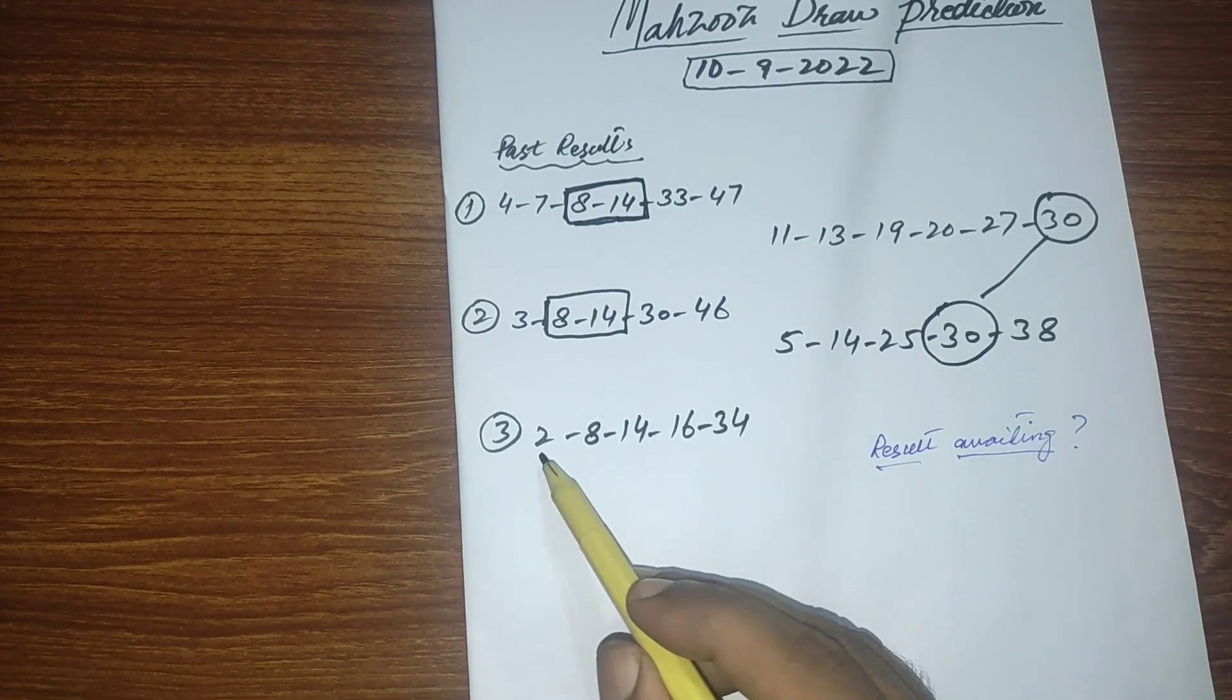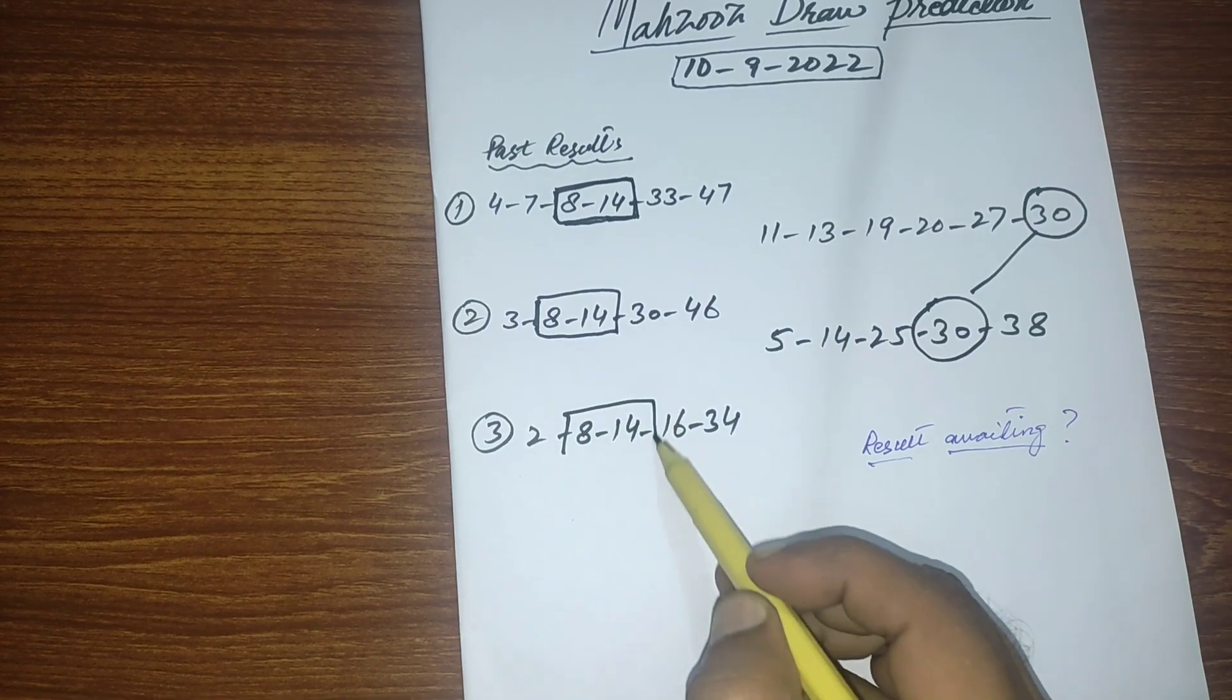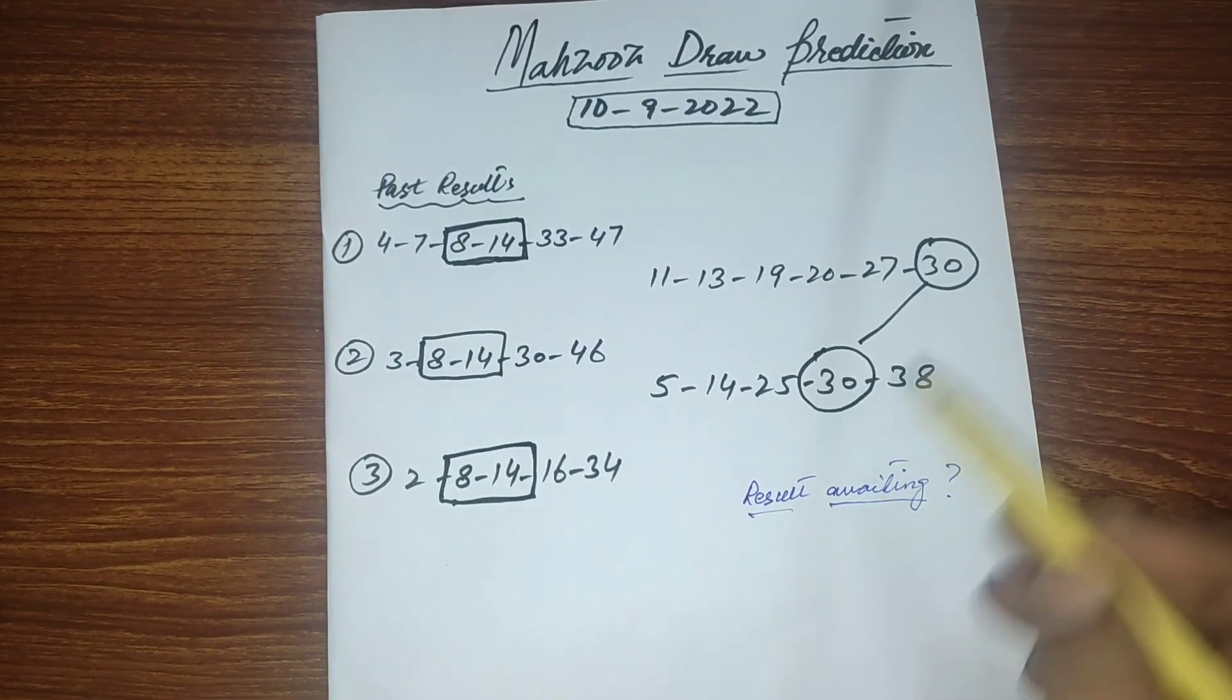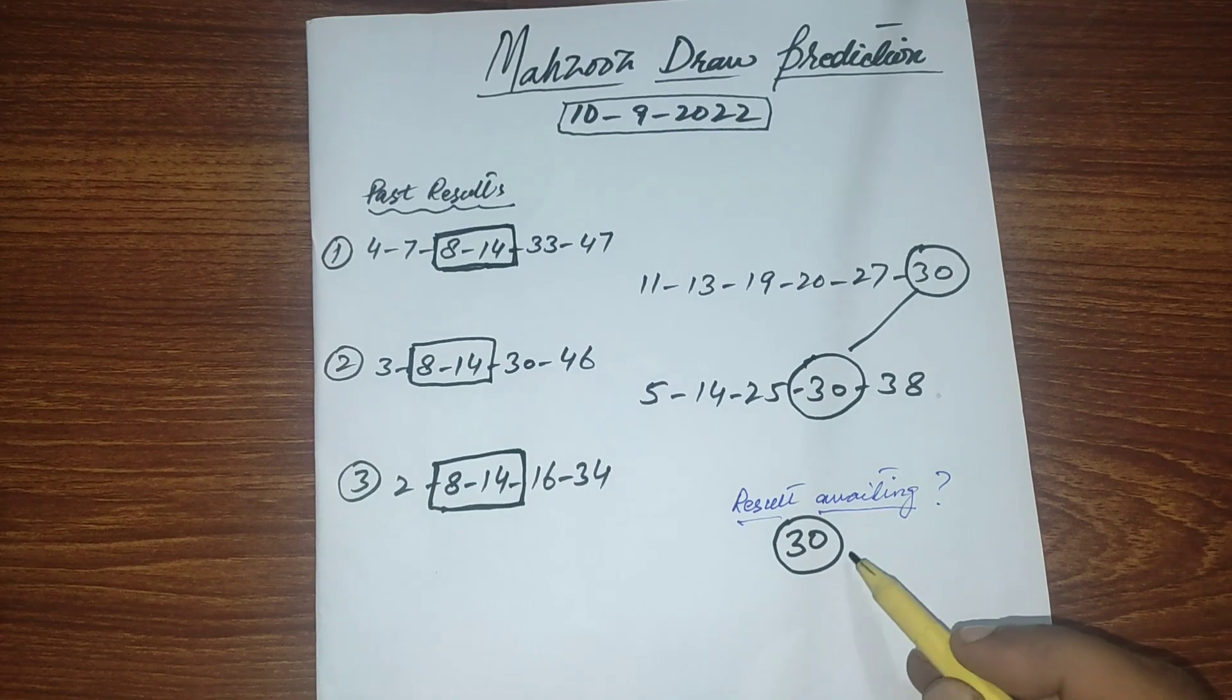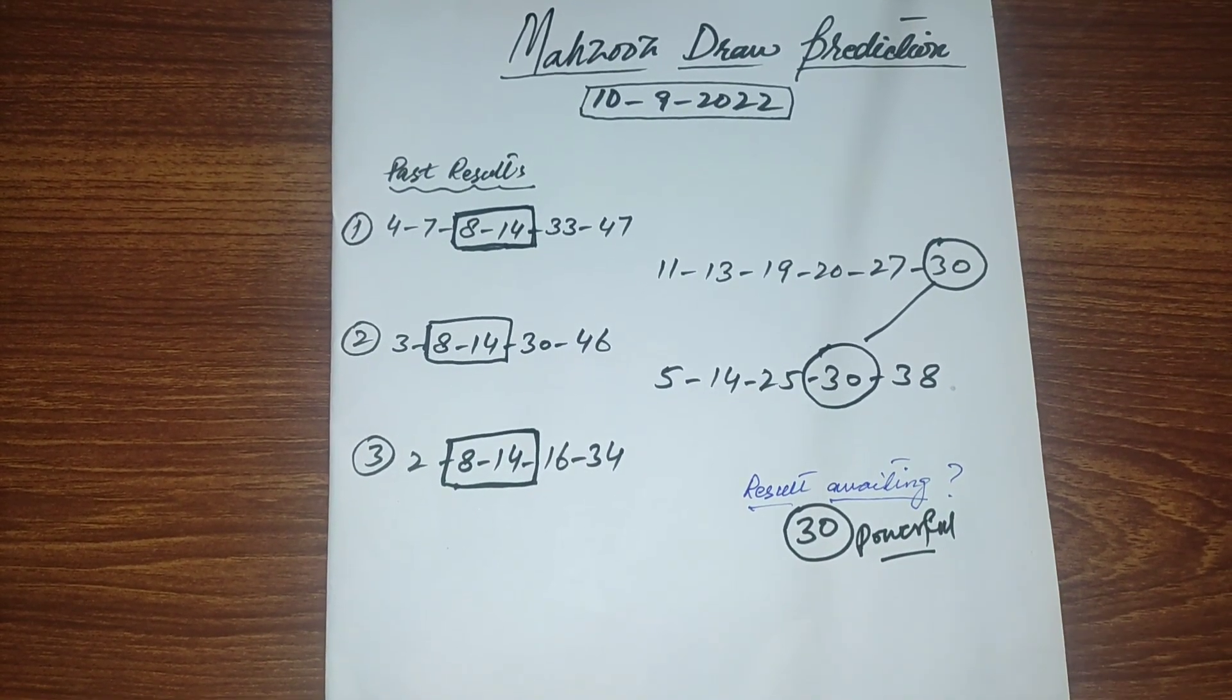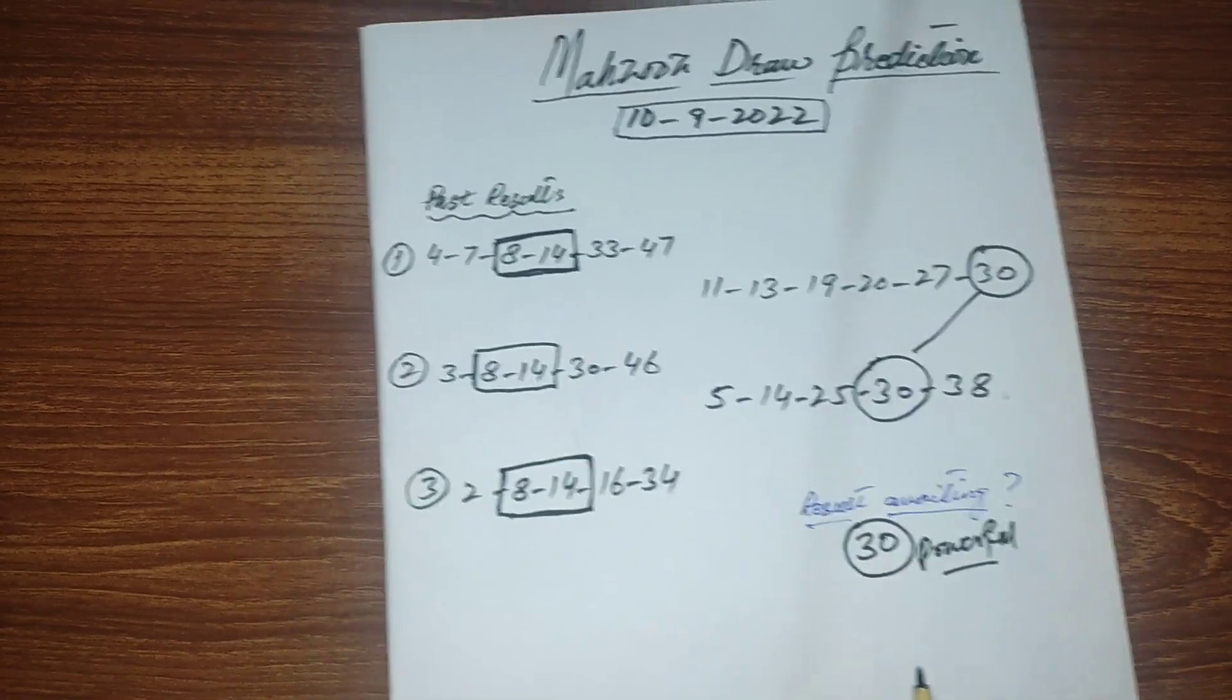Now this third draw, which is our previous draw of Mahzuls, 8 and 14 has come together. You can see according to this routine, the number 30 is the best number for our upcoming draw, a powerful number for our upcoming draw of Mahzuls. If you like this number, you should select it in your selection.